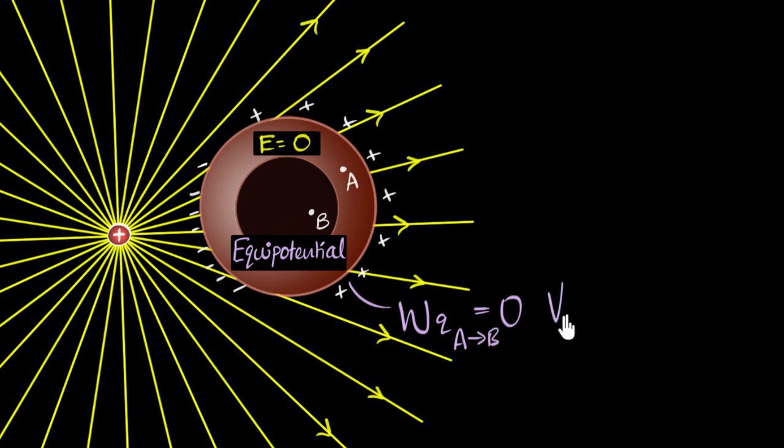In other words, potential at A must be exactly equal to potential at B. And A and B can be any two points on the surface, inside, inside the cavity, any two points, because there are no electric fields. And what does that mean? That means the potential everywhere must be the same, meaning our entire conductor is an equipotential surface.